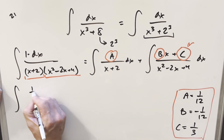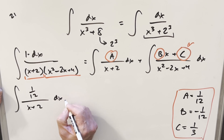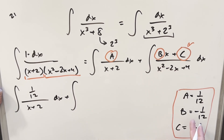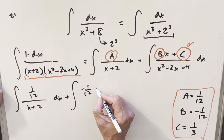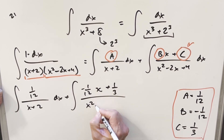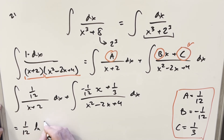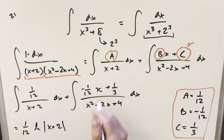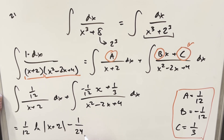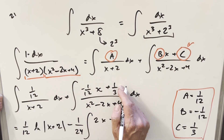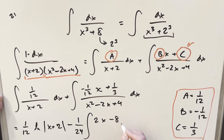Plugging back in: the first integral is 1 over 12 times the integral of 1 over x plus 2 dx. The second integral has minus 1/12 times x plus 1/3 in the numerator over x squared minus 2x plus 4. The first integral is easy — we take out 1/12 and get natural log absolute value of x plus 2. For the second integral, I'll factor out minus 1 over 24, making the numerator 2x minus 2, plus a remaining term. So we get minus 1 over 24 times the integral of 2x minus 2 over x squared minus 2x plus 4, plus an additional integral.